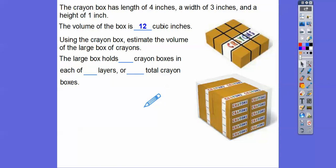The large box holds four crayon boxes. So here's four crayon boxes. Four crayon boxes in each of how many layers? Here's one layer, two layers, three layers, four layers, five layers. So there's four crayon boxes in five layers right there. So if we do 4 times 5, that gives us 20 crayon boxes.